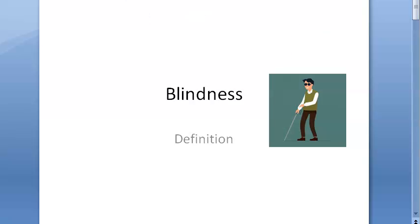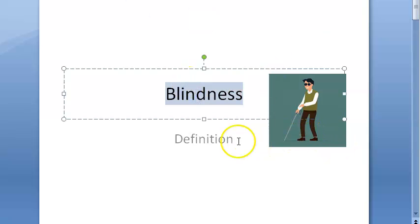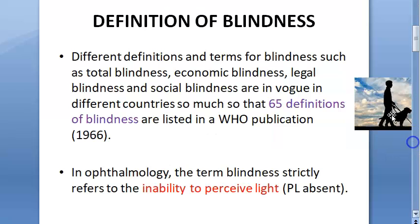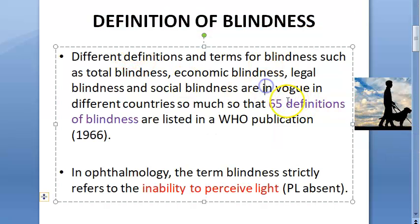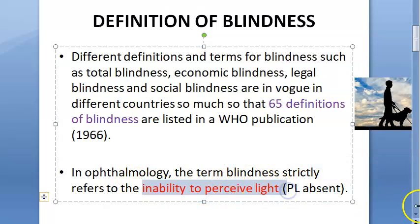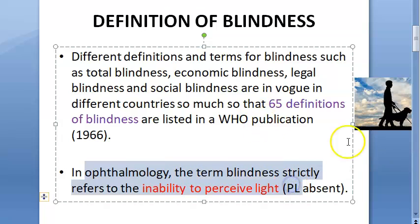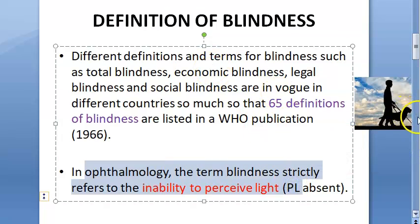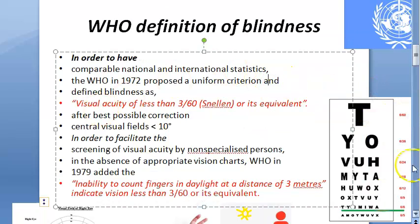In this video we want to look at the definition of blindness. There are many definitions of blindness — according to WHO, 65 definitions have been published. However, in ophthalmology, the inability to perceive light — PL absent, PL negative — is what is called blindness. This is nothing but absolute or total blindness, which is the ophthalmology definition.